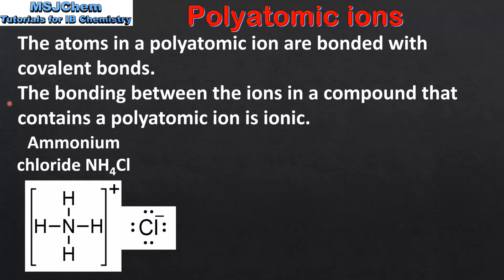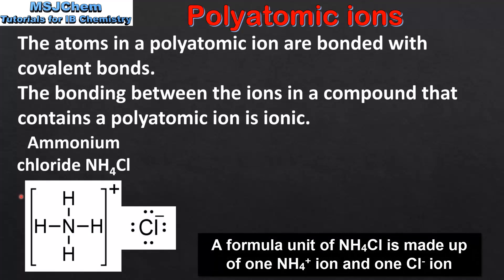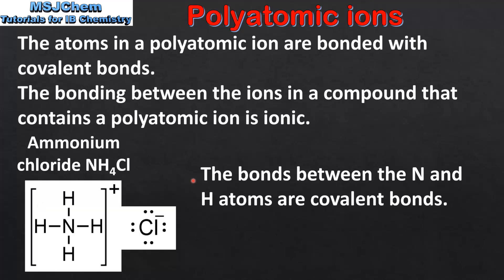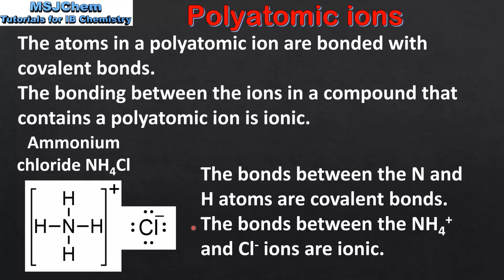The bonding between the ions in a compound that contains a polyatomic ion is ionic bonding. The example we look at is ammonium chloride. Ammonium chloride is an ionic compound that consists of one ammonium ion and one chloride ion. The bonds between the nitrogen and hydrogen atoms are covalent bonds. The bonds between the ammonium ions and the chloride ions are ionic.